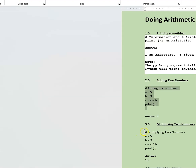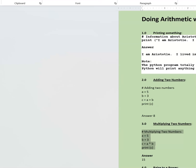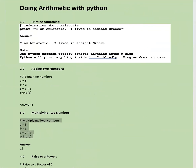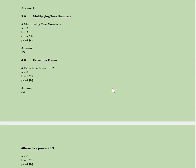Next is multiplying two numbers. a equals 5, b equals 3, c equals a multiplied by b.